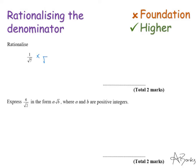I'm going to multiply the bottom by root 7. However, if we only multiply the bottom by root 7, we're actually changing the value of the fraction. The only thing we can multiply by to keep it the same value is 1. So I'm going to multiply by root 7 over root 7, because this equals 1. Multiplying the tops: 1 times root 7 is root 7. On the denominator, root 7 times root 7 is 7. So the answer is root 7 over 7. The denominator is now an integer.